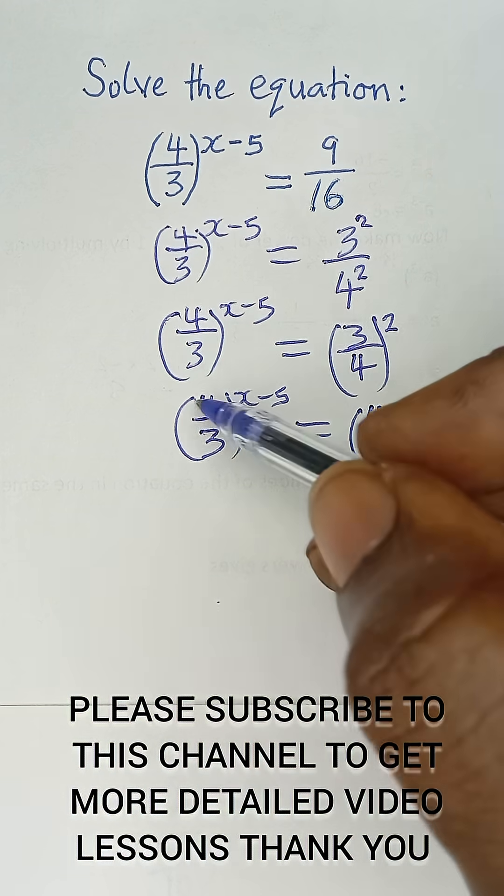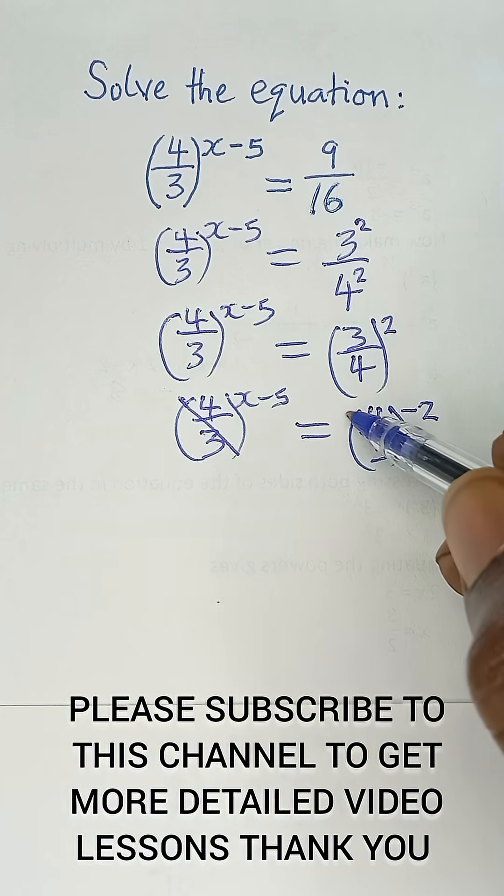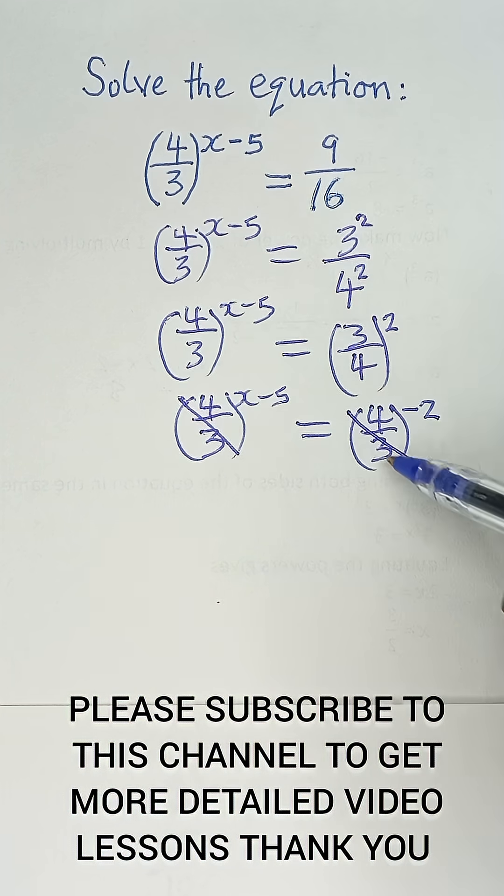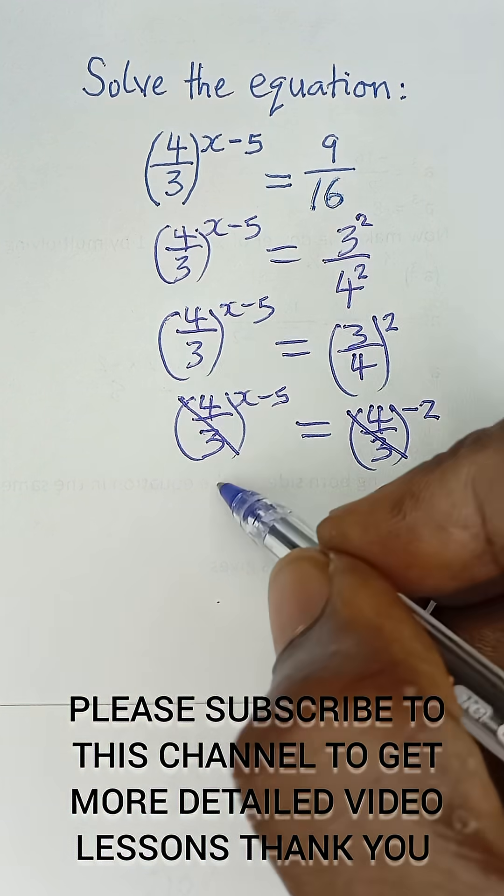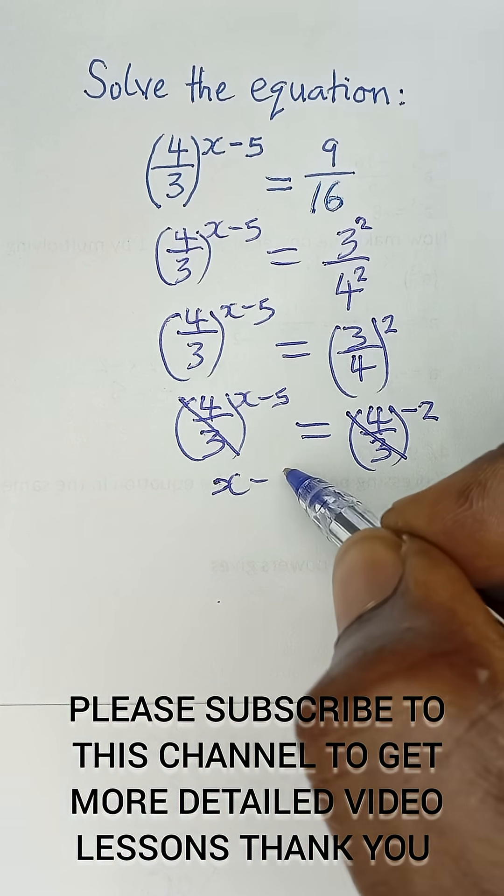Now, with that, we can simply say since the bases are equal, 4 over 3 equals 4 over 3, it also means that the powers are equal. So, I can simply equate the powers and write x minus 5 is equal to negative 2.